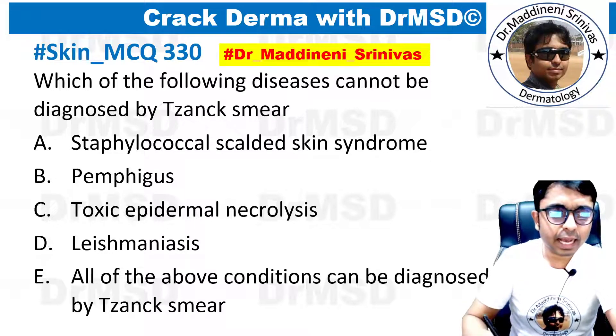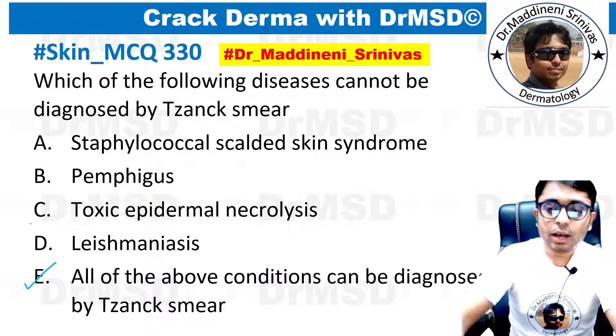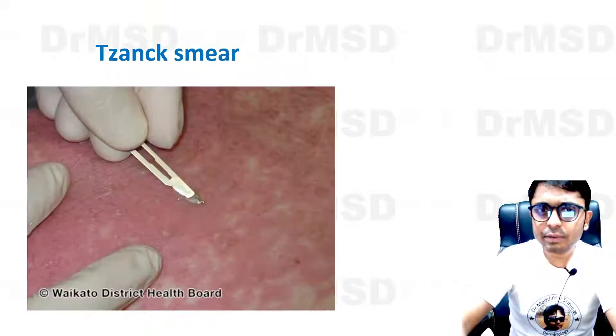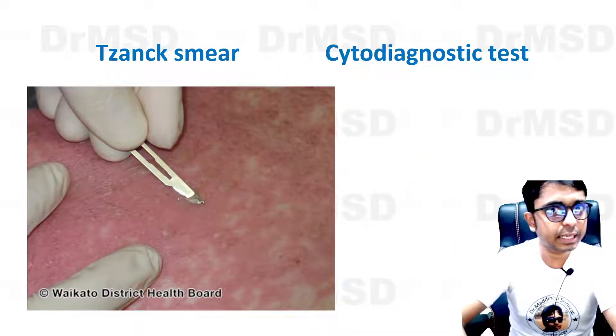This is the MCQ and if you have marked the answer as option number E, you are right. Let us see what is the Tzanck smear — it is basically a cytodiagnostic test in which we are going to select vesiculobullous lesions.